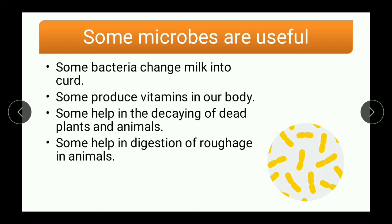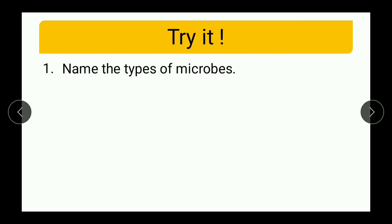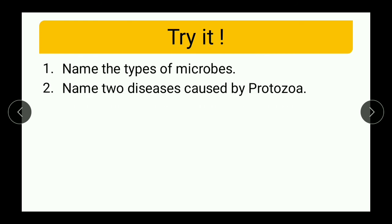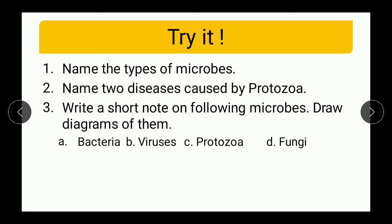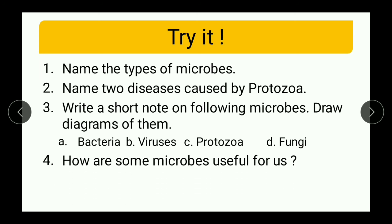Today we learnt the kinds of microbes and how these microbes are useful for us. Now there are a few things you can try at home: name the types of microbes; name two diseases caused by protozoa; write a short note on each of the four microbes — bacteria, viruses, protozoa and fungi — and draw diagrams of them; and finally, explain how some microbes are useful for us. That was today's assignment. I hope you enjoyed the session — see you in the next session.